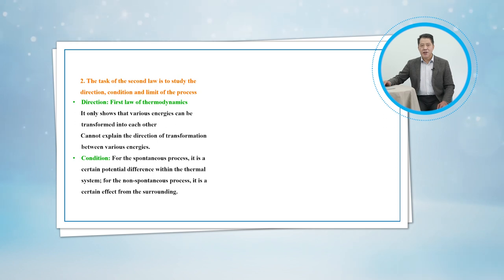Secondly, let's talk about the condition for a process. As we have known, the condition for a spontaneous process to proceed is a certain potential difference within the thermal system. For the non-spontaneous process, it is a certain effect from the surroundings. Conditions for the process to proceed can be summarized: All non-spontaneous processes must be accompanied by spontaneous processes.